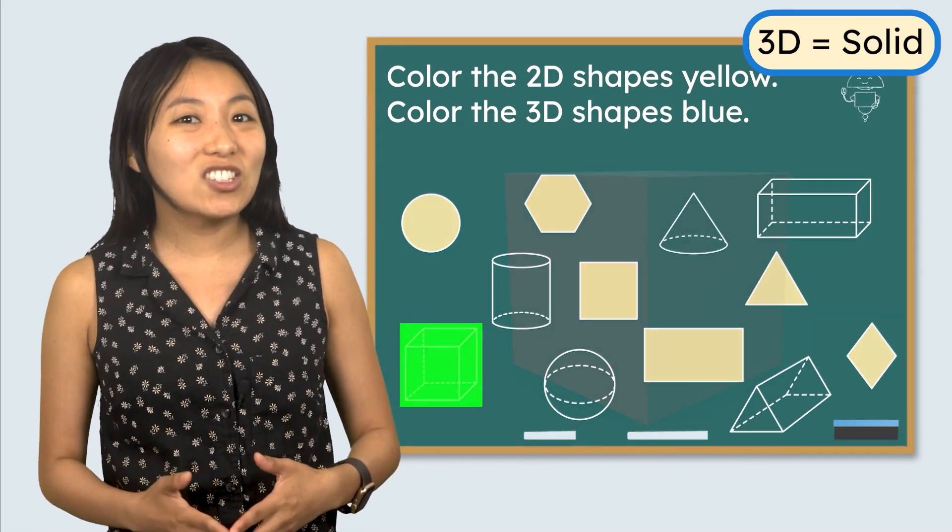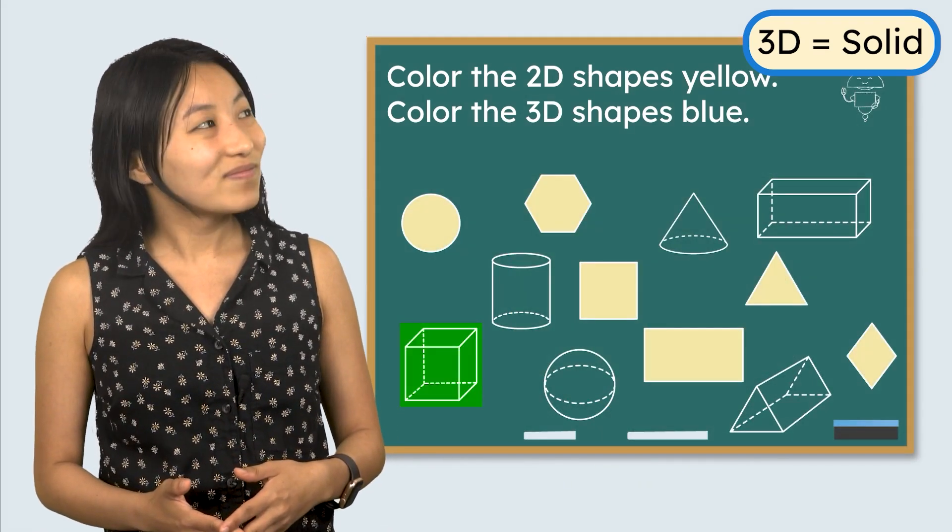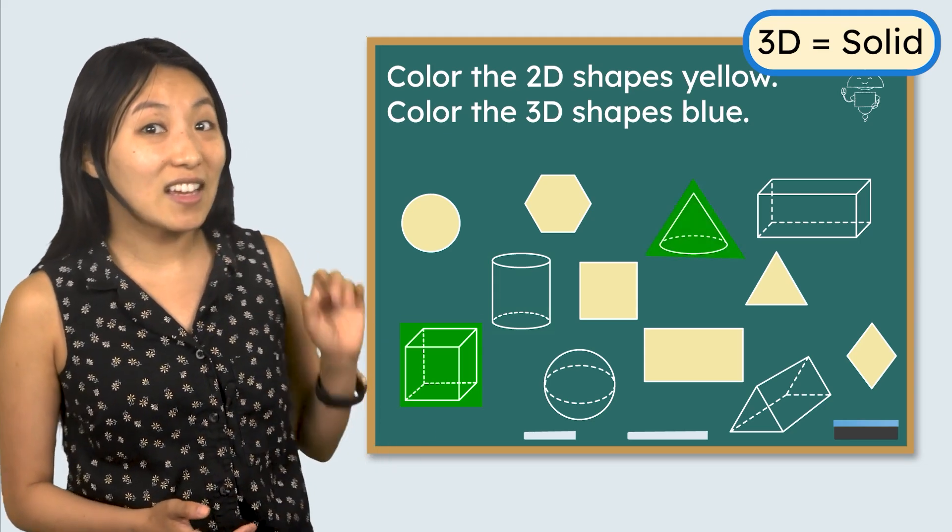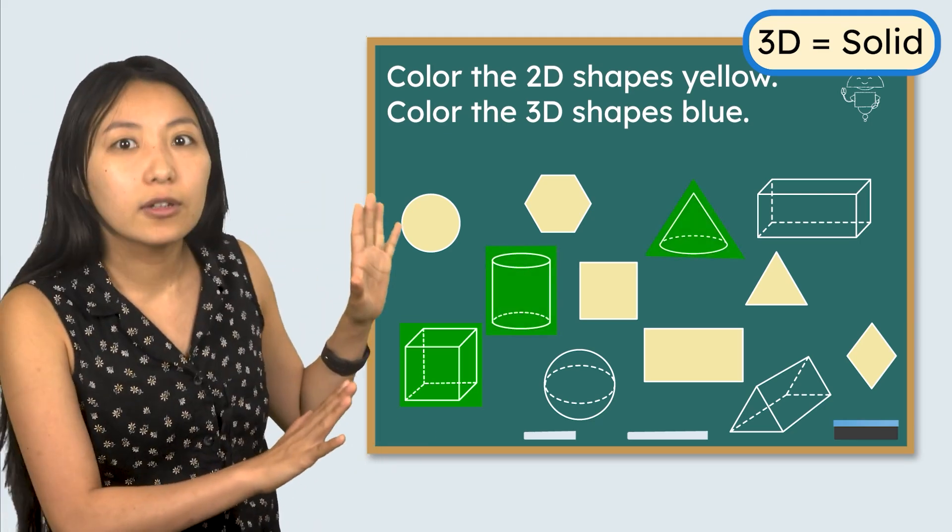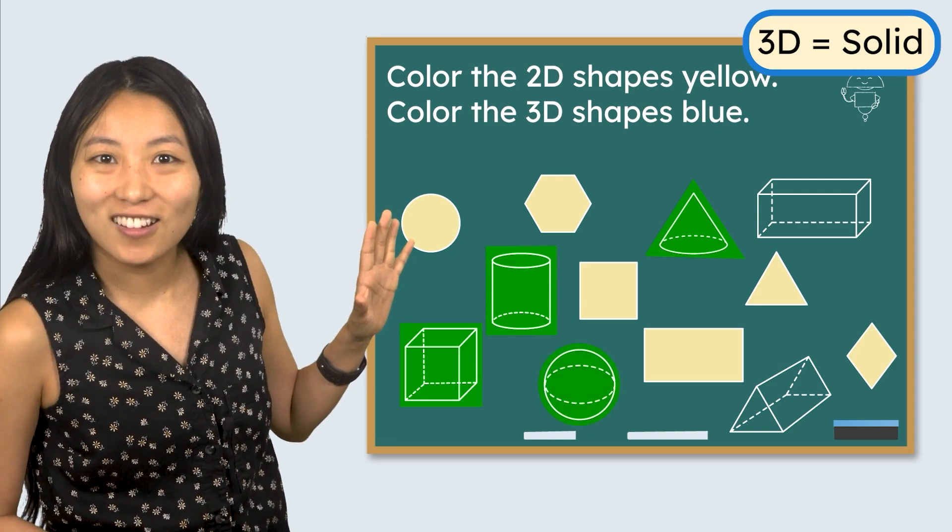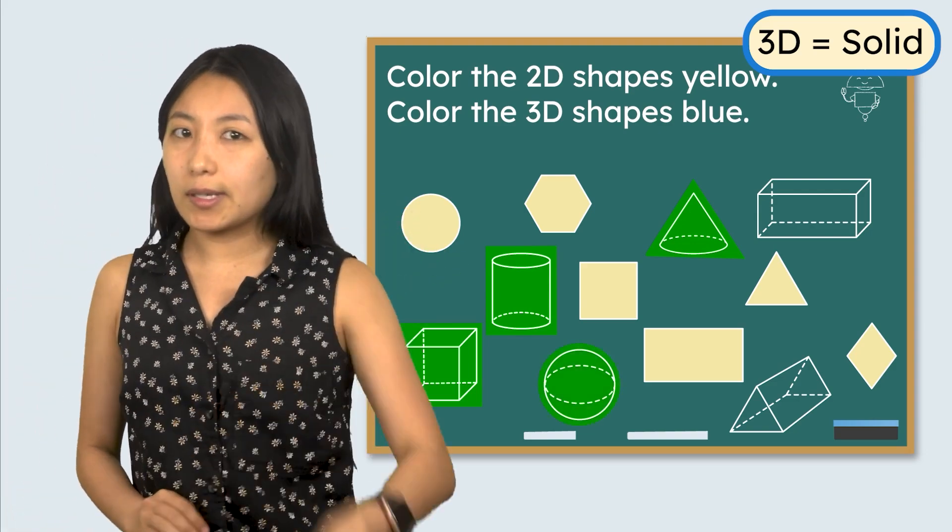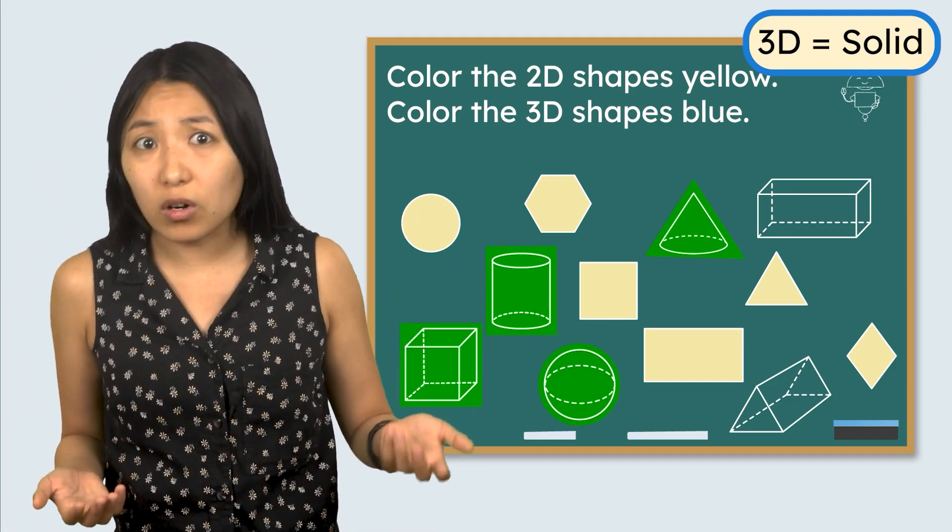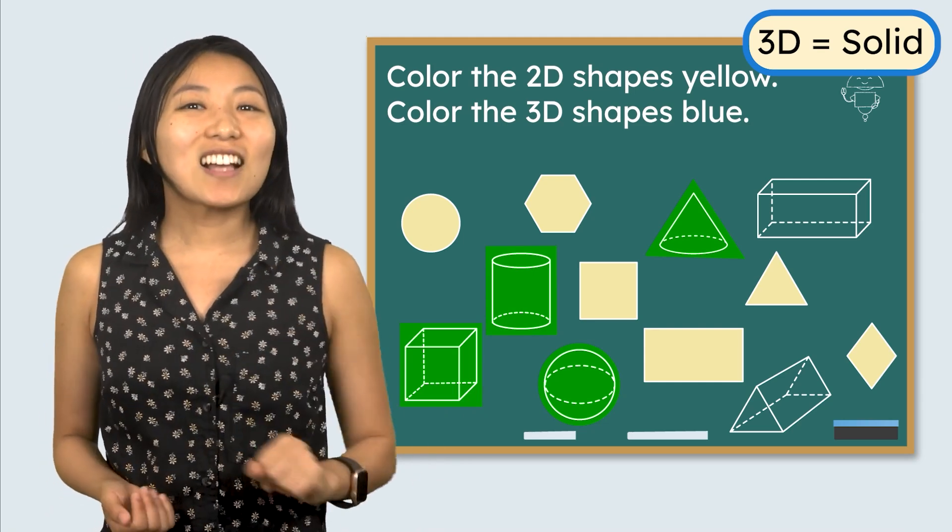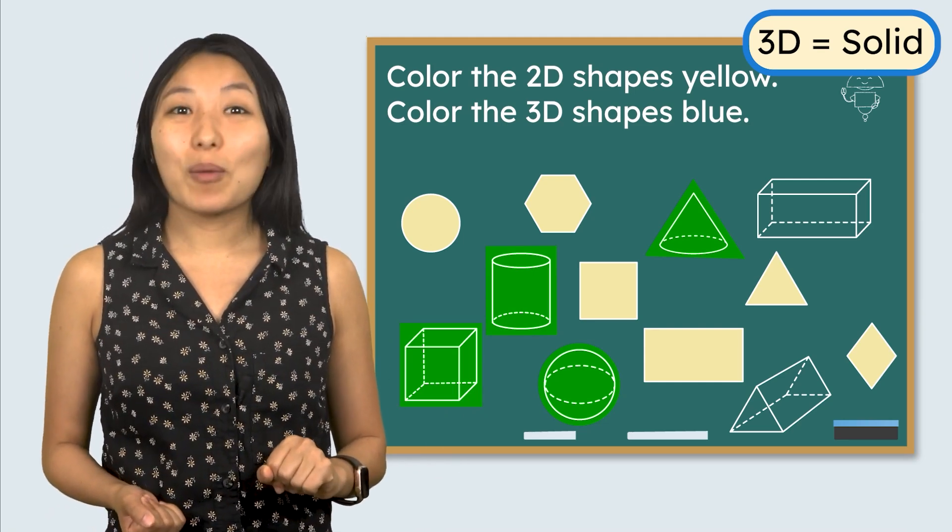What other 3D shapes do you recognize? I see a cone here and a cylinder here. Oh and look, here's a sphere. Now spheres are interesting because they don't have any faces, edges or corners. Let's color all of our 3D shapes blue.